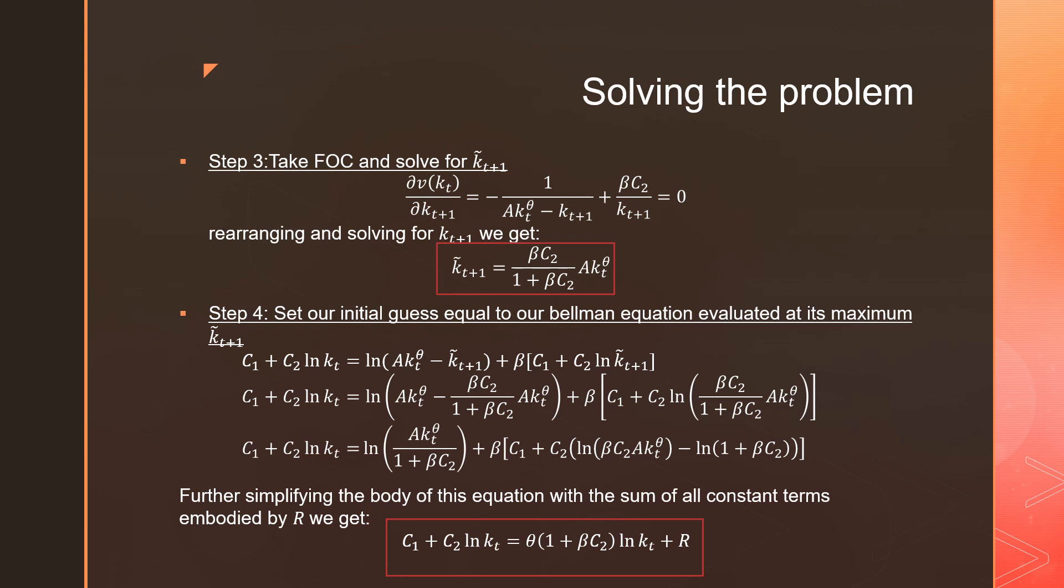Step number four is that we're going to take our initial guess and set it equal to our Bellman equation evaluated at its maximum, which is going to be this k_{t+1} tilde. So we're going to have this whole mess of algebra that we're going to just have to solve and work all the way through.